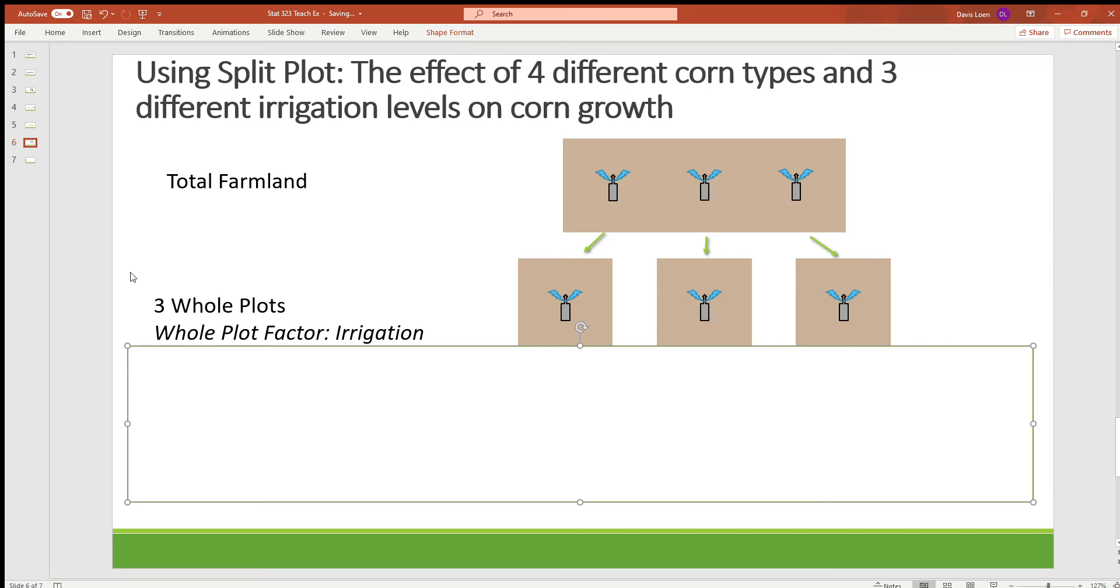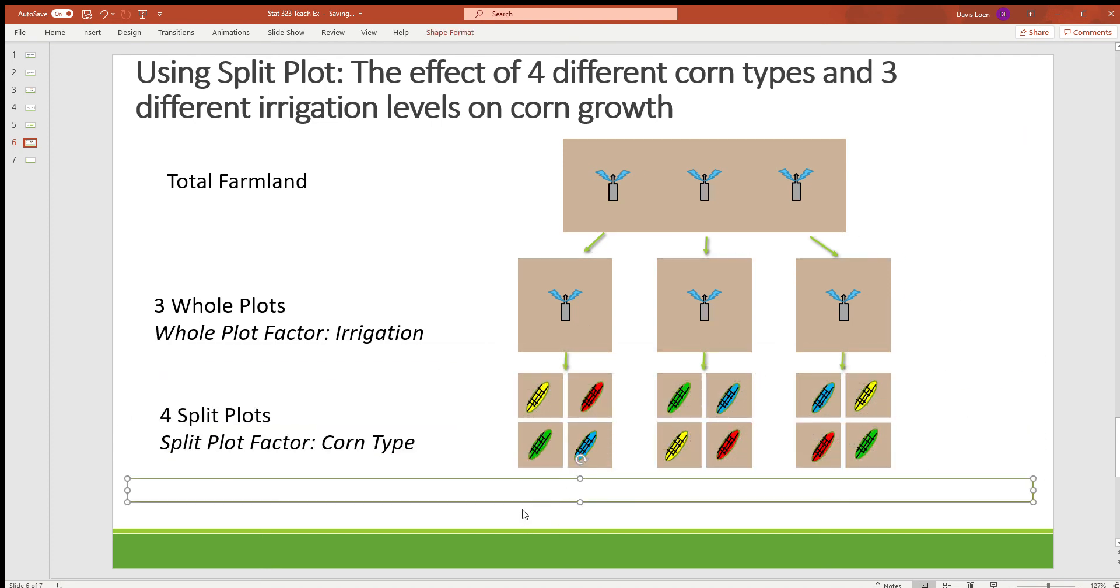Now to form our split plots, we have the whole plots broken up into four different areas, one for each type of corn. So the split plot is just a little quadrant of the whole plot with the split plot factor being corn type.